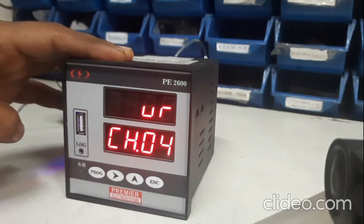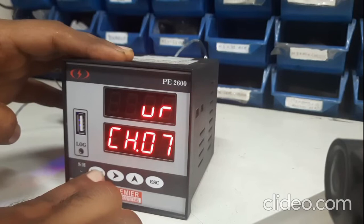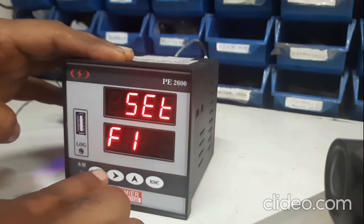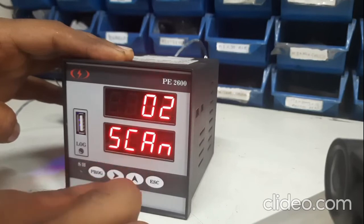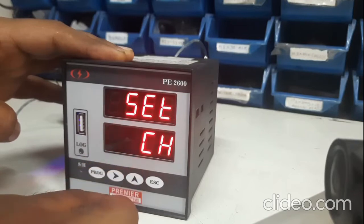Every channel is displayed for two seconds which is settable in the program menu. You can select F1 and you can increase or decrease the scan time. You can skip and skip the channel.